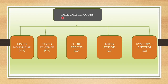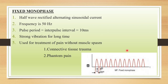Coming to the dynamic modes, there are different modes. First mode is fixed monophase. Second mode is fixed diaphase. Third mode is short period or cortex period. Fourth mode is long period or longest period. And fifth, the last mode, is syncopated rhythm.